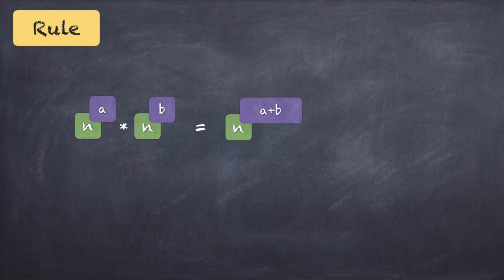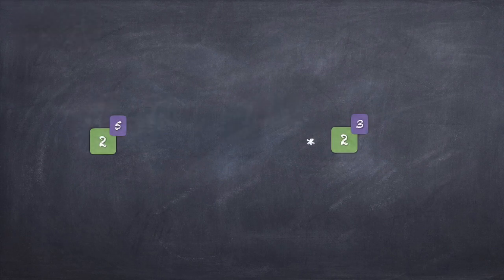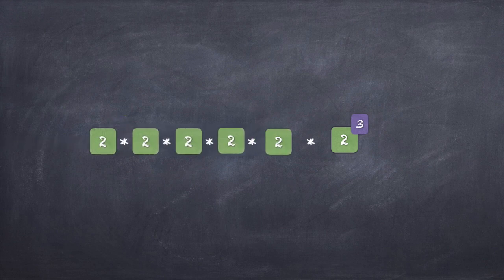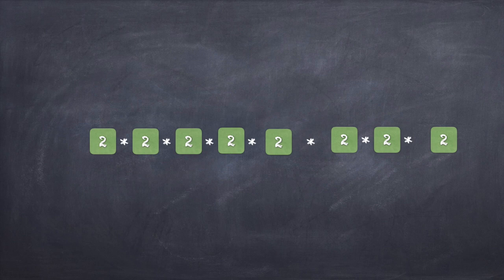Let's see how we can derive this from basics. Say we have 2 raised to 5 multiplied by 2 raised to 3. What does 2 raised to 5 mean? From session 1, 2 raised to 5 means 2 multiplied by itself 5 times — so there are five 2s being multiplied together.